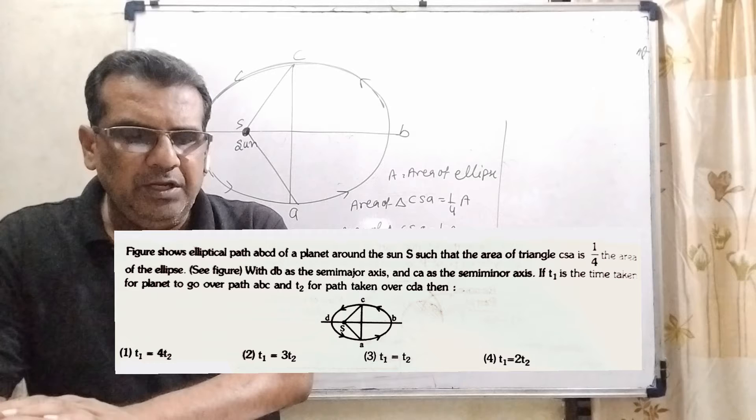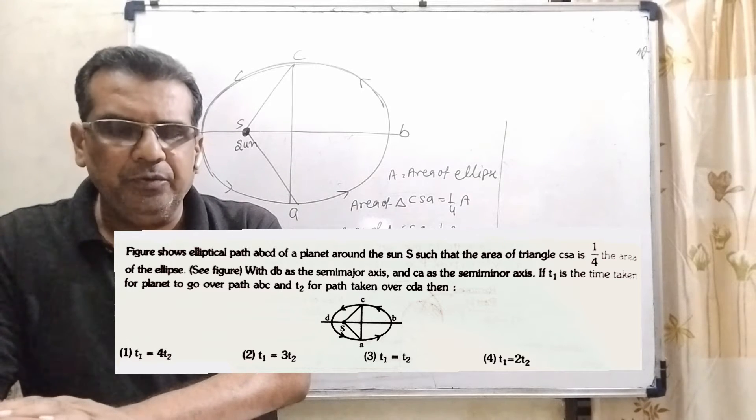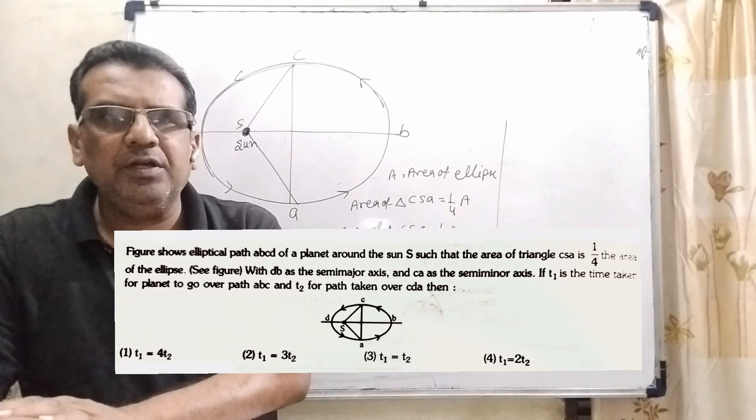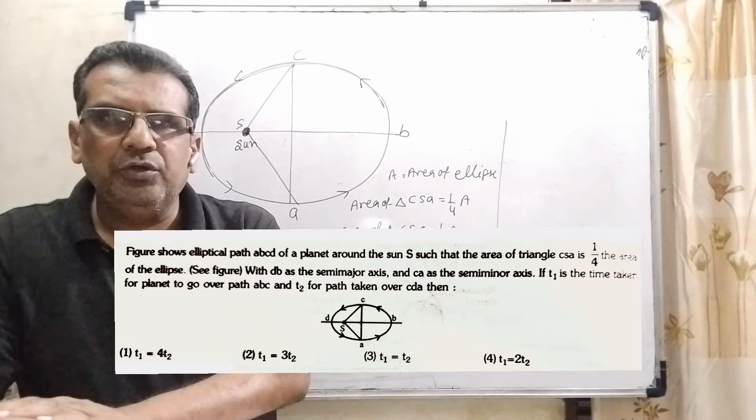Option first, T1 equal to 4T2. Option second, T1 equal to 3T2. Option third, T1 equal to T2. Option 4, T1 equal to 2T2.